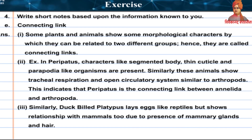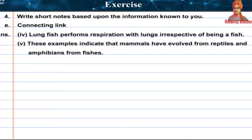E: Connecting Links. Some plants and animals show morphological characters by which they can be related to two different groups — hence they are called connecting links. Example: In Peripatus, characters like segmented body, thin cuticles, and parapodia-like organs are present; these animals also show tracheal respiration and open circulatory system, indicating Peripatus is the connecting link between Annelida and Arthropoda. Similarly, the duck-billed platypus lays eggs like reptiles but shows relationship with mammals due to mammary glands and hair. Lungfish performs respiration with lungs irrespective of being a fish. These examples indicate that mammals evolved from reptiles and amphibians evolved from fishes.